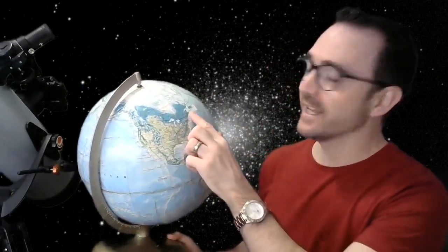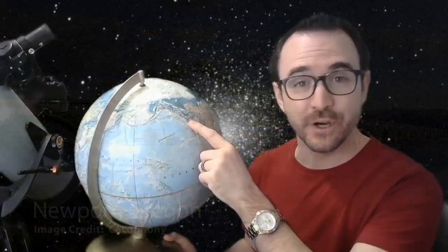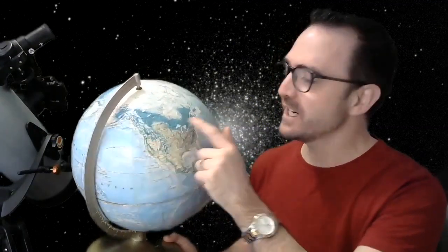Now, it's important to note that this does not have anything to do with where you live east or west. It only has to do with how far north or south you are from the equator. So as a quick example, I live in Halifax, Nova Scotia, Canada, which is exactly as far north as Newport, Oregon. Which means that although the sun sets about four hours later in Oregon, we share the exact same view of the stars on any given night.